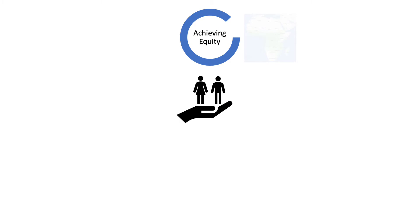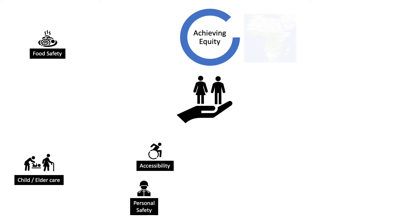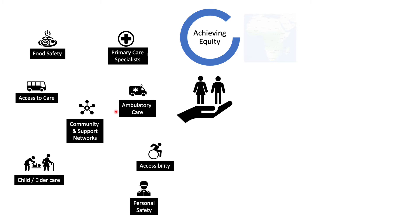What contributes to differences in mortality and incidences in these two countries? Angola went through 20 years of Civil War and is just recovering, with much of its healthcare infrastructure devastated or unable to be built. Coupled with challenges from refugees and asylum seekers from neighboring countries like the DRC, there are ongoing challenges with basic food safety, child and elder care, ambulatory care, access to care, and accessing primary care specialists.